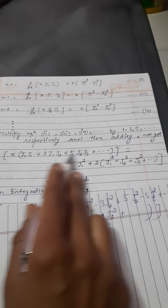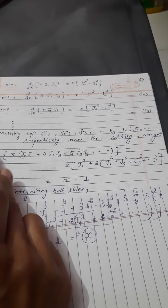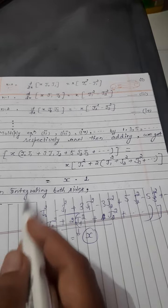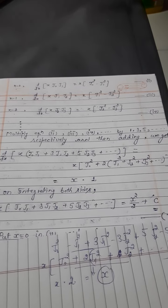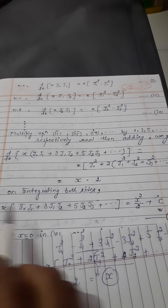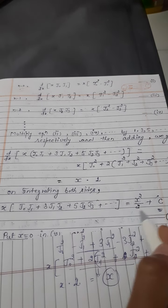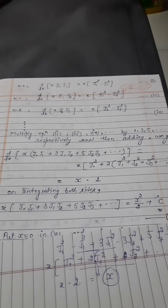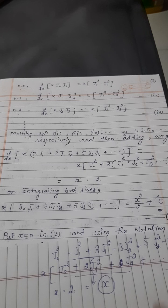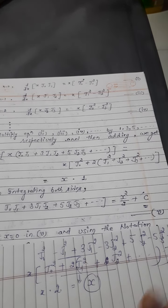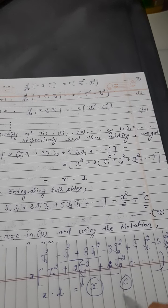Now d/dx of this term equals x, so remove differentiation: integrate both sides. Integrating: x·(J₀J₁ + 3J₁J₂ + 5J₂J₃ + ...) = x²/2 + C — equation 5. Next we will find the value of constant C.